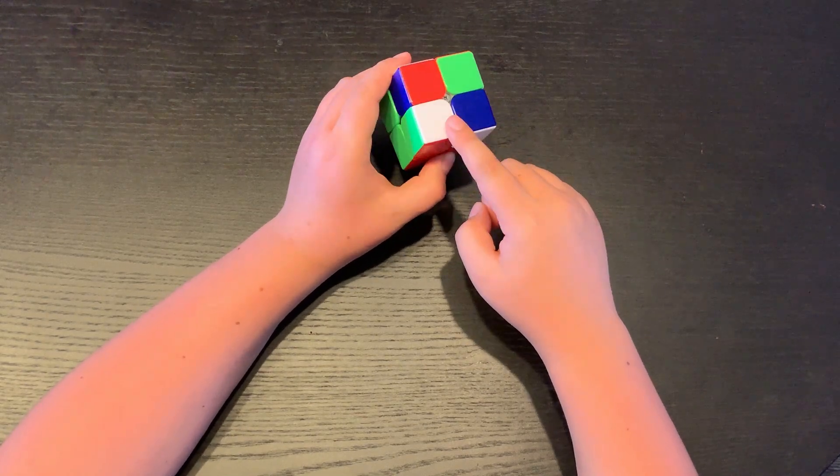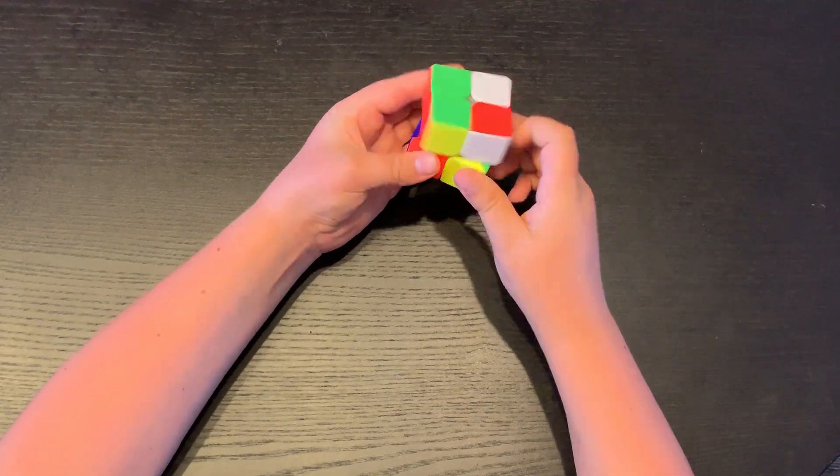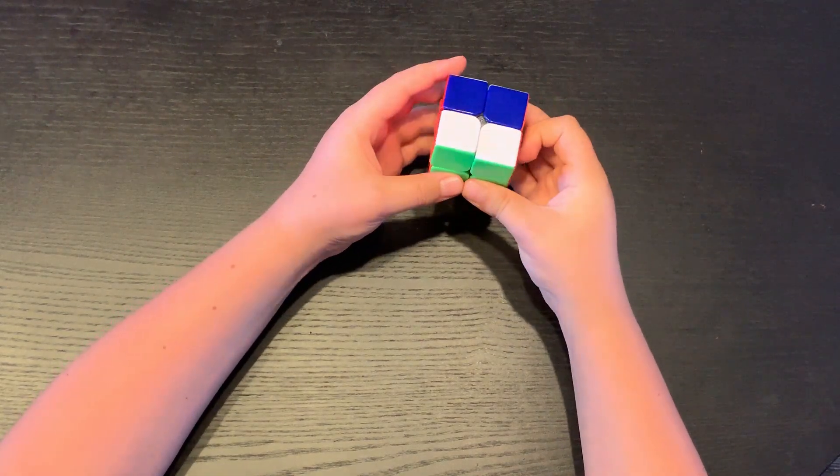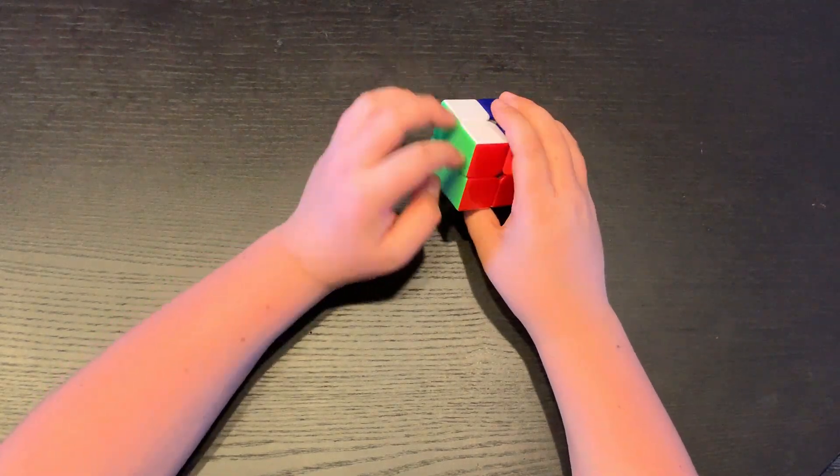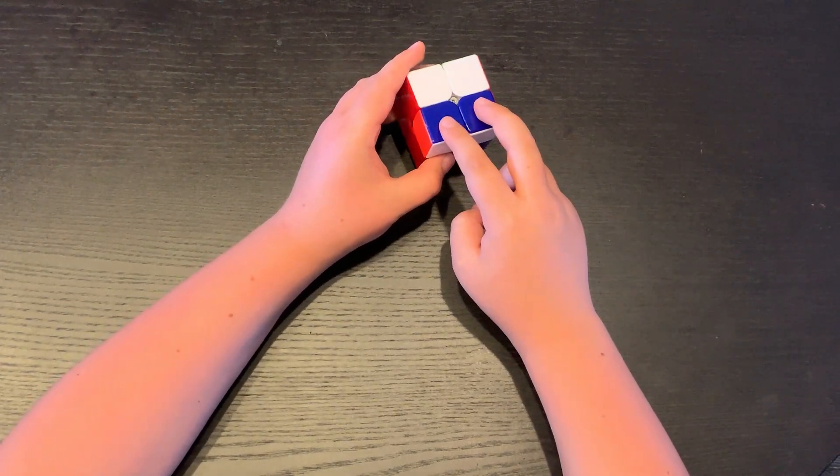So you have to repeat that same algorithm, the R U R' U' one, and then just put it in. And now you have these two F2Ls here, and now you have to flip these two corners.